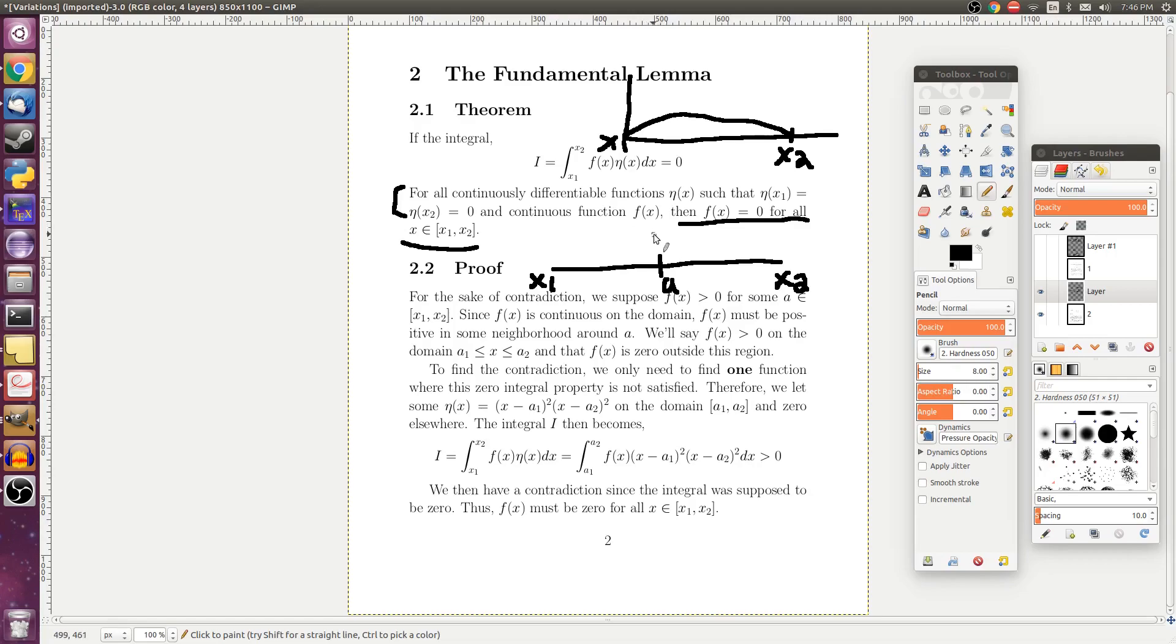Because since f of x is continuous, then if it's positive at a, then it's going to have to be positive in some neighborhood around a. So in other words, it would have to be something like this.